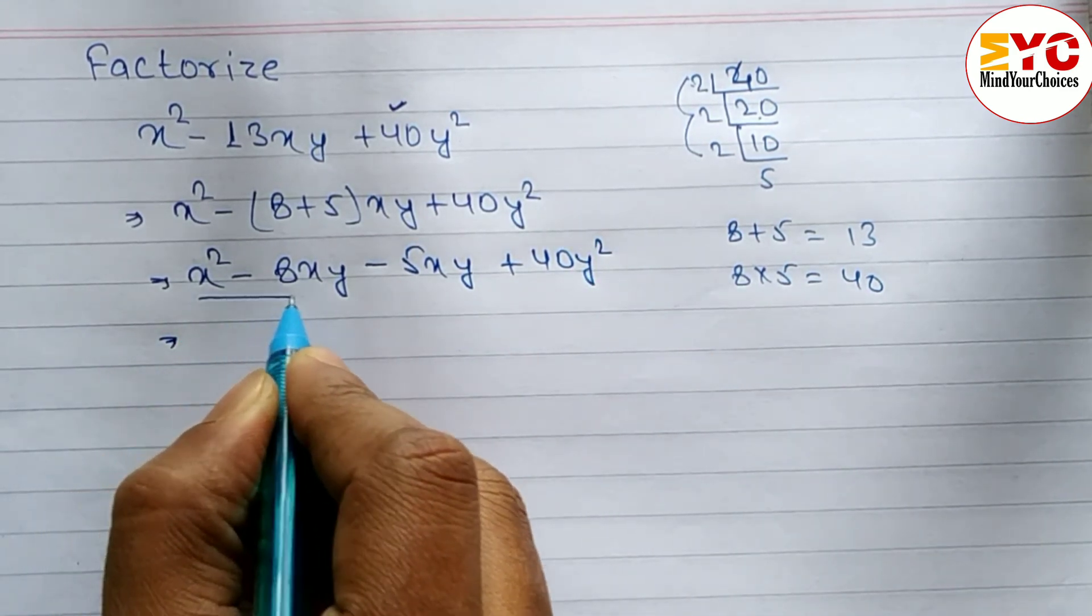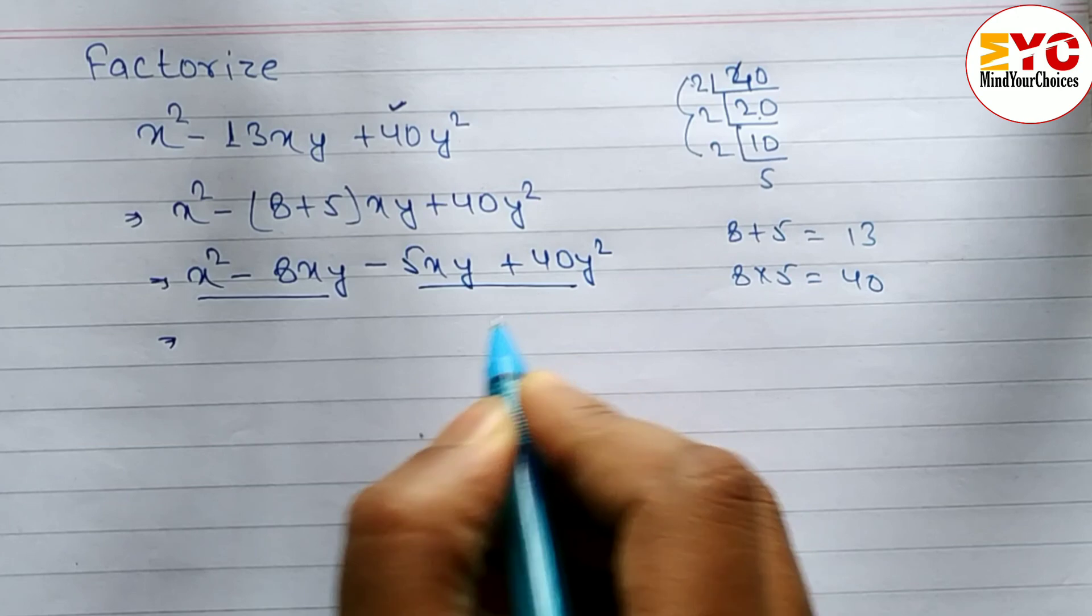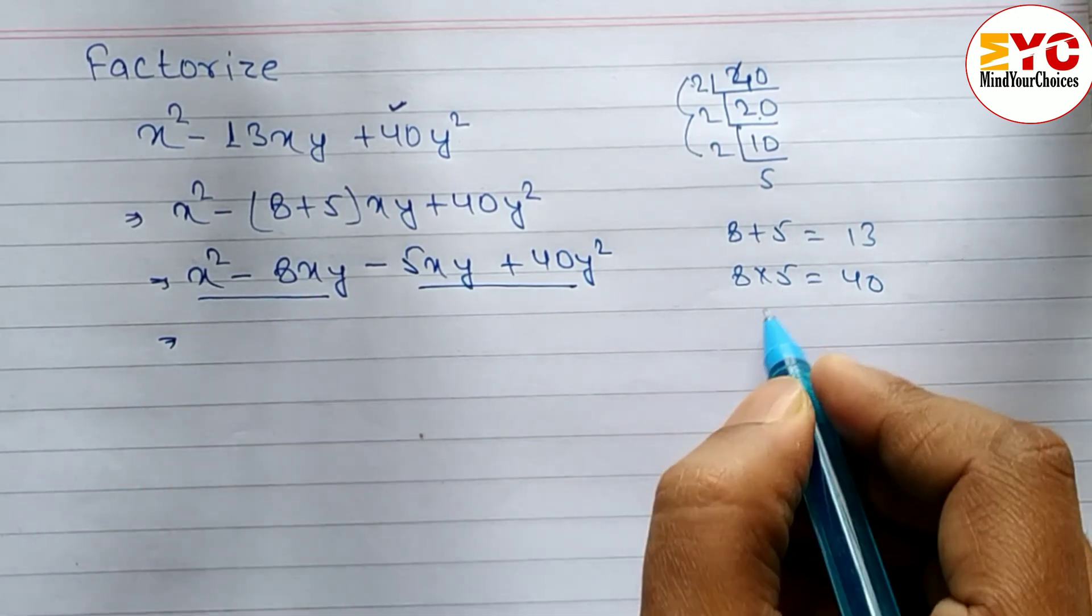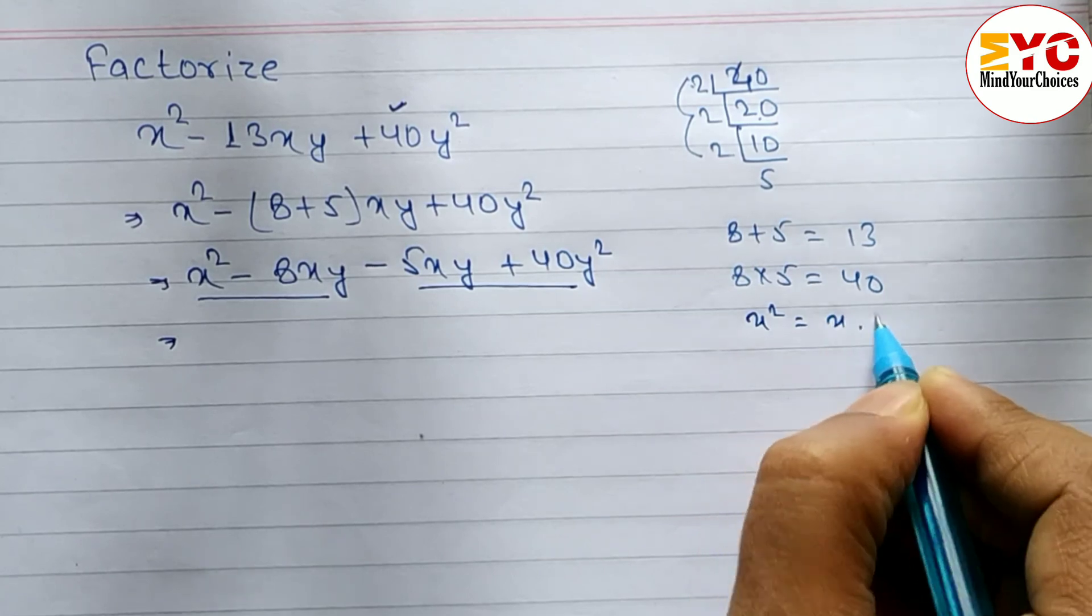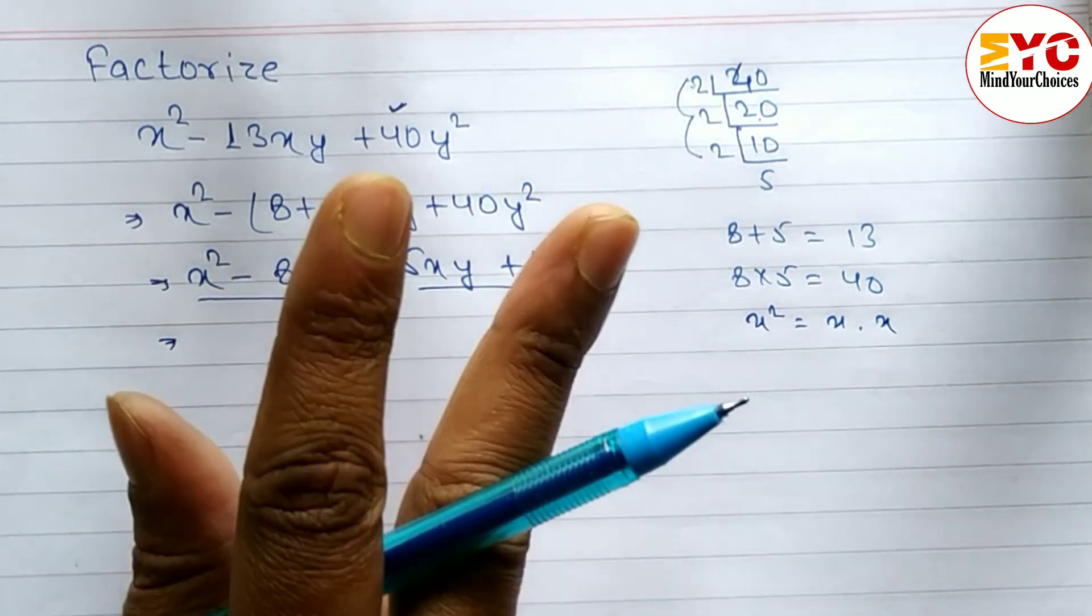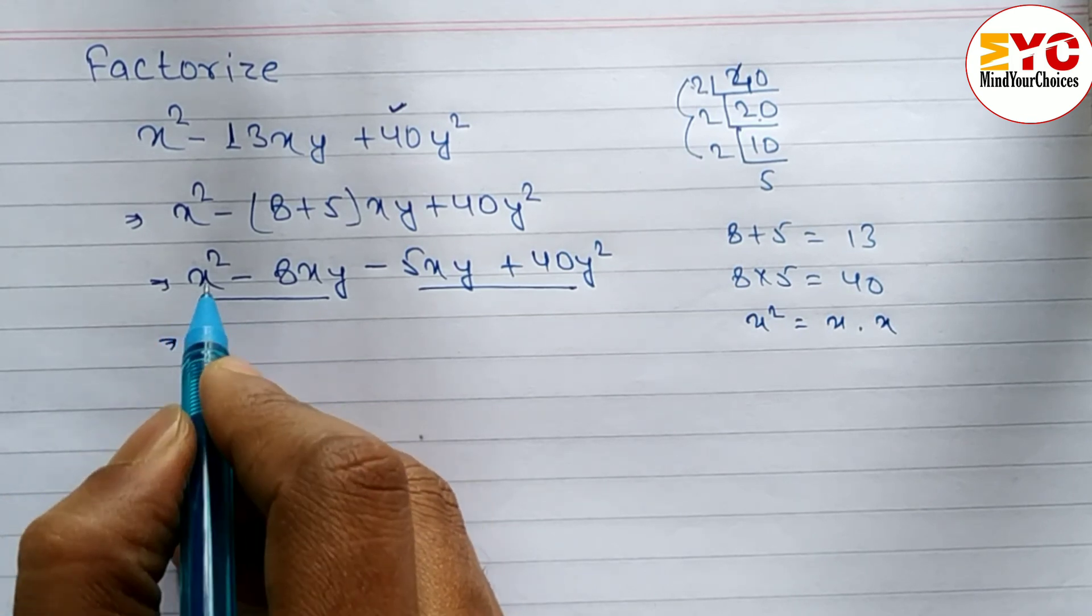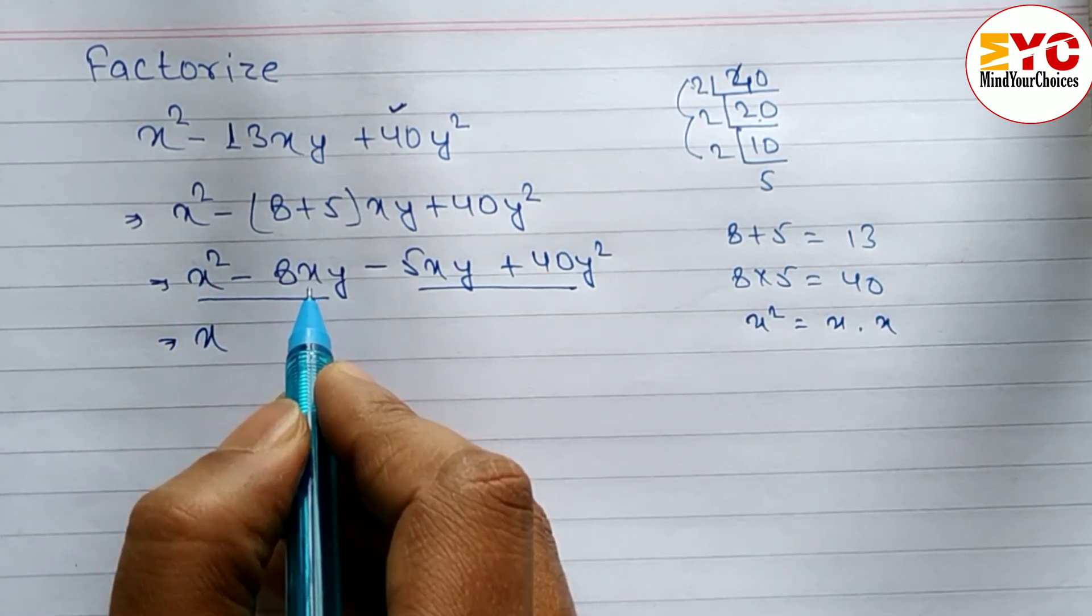Now from the first two terms we take common, and from the last two terms we take common. Here is x square, which means x times x. So we can take x common, which belongs to both first and second.